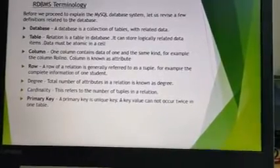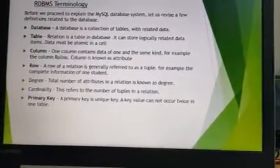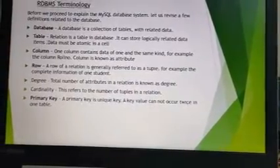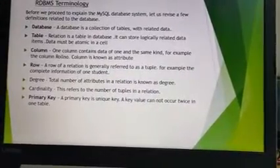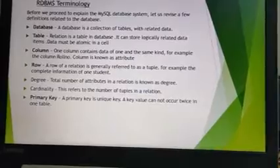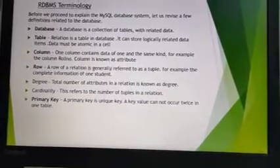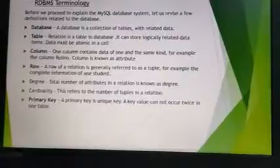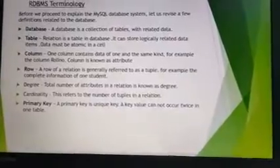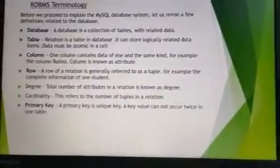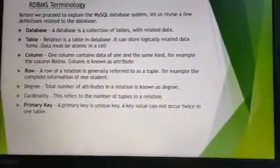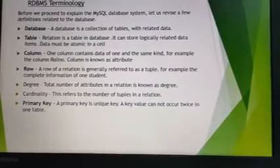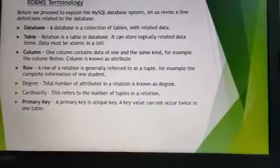When we talk about column, or attribute, one column contains data of one or the same data type. For example, the column 'roll number' — roll number is the name of the attribute and the data type may be integer. Basically for roll number we always choose integer data type. So a column is known as an attribute.